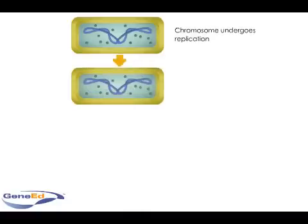The first step in this process is replication. At the replication stage, the bacteria increases in size and makes an exact duplicate of its chromosome.